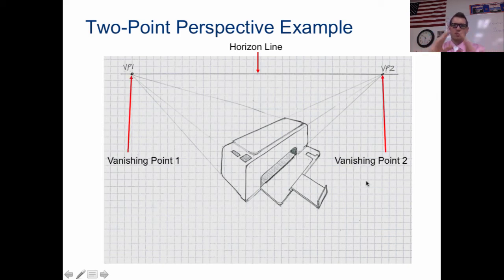So rather than it focusing on one spot, this printer is getting smaller up here, and then smaller in this direction, which means it looks like we're looking at it from the side of the printer, although it's still a 2D drawing on a piece of paper.